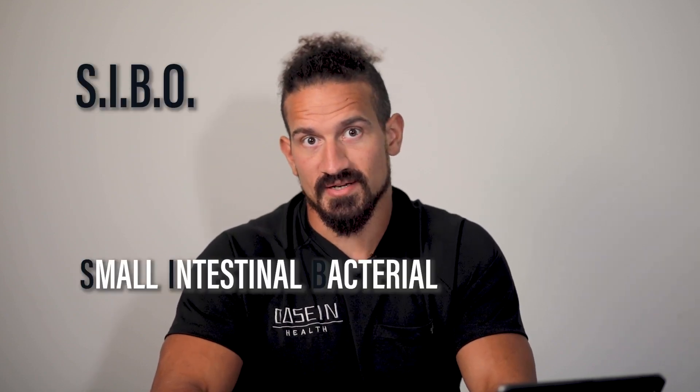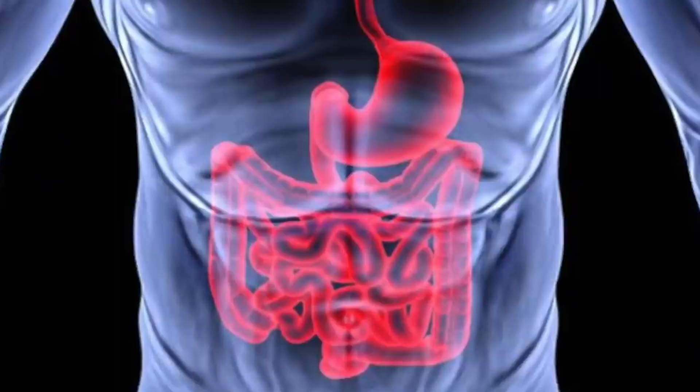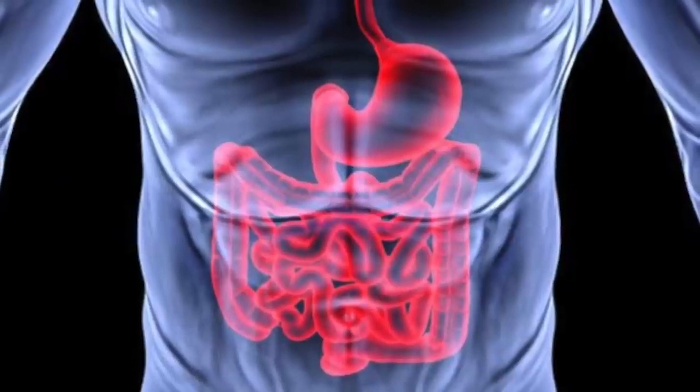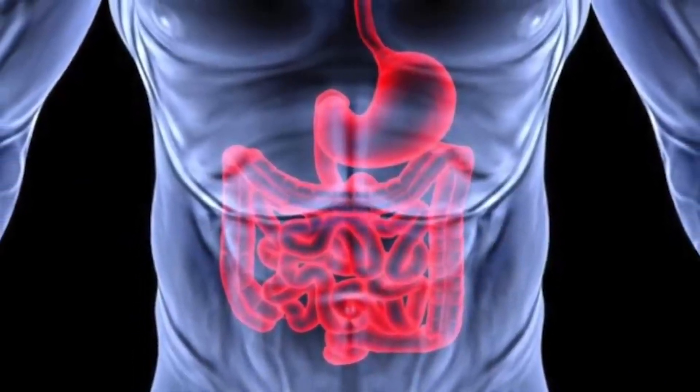SIBO — small intestinal bacterial overgrowth. Most of the microbiome is going to be situated in the colon, the large intestine. In some instances, the bacteria can migrate from the colon into the small intestine.